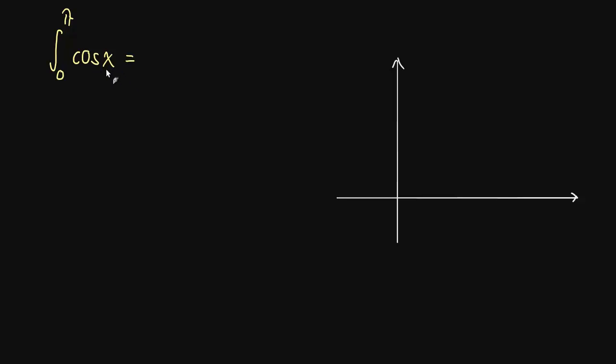Well, the derivative of sine is cos, so that means the antiderivative of cos is sine. Take a minute to pause and think about how that works out if you need to. So we have, this is our integral according to the fundamental theorem of calculus. So we have the sine of π minus the sine of 0. Well, the sine of π is 0. The sine of 0 is 0, so of course this is just equal to 0.